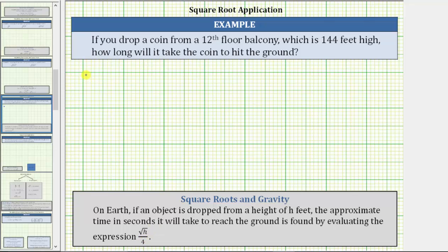So for our problem, the time in seconds for the coin to hit the ground is equal to the square root of, the height is 144 feet, so we have the square root of 144 divided by 4.